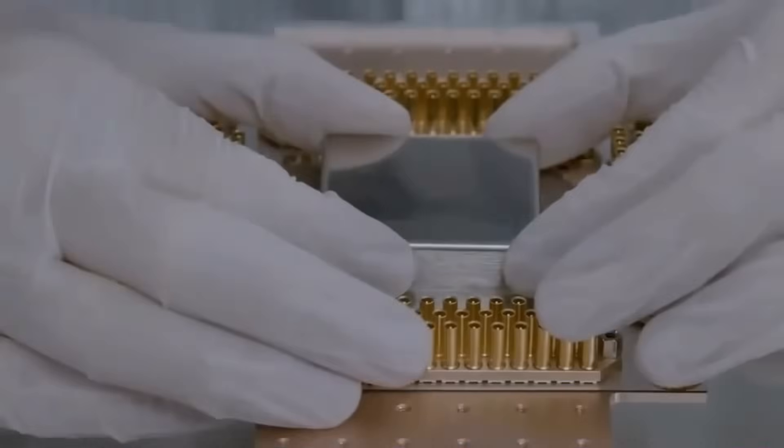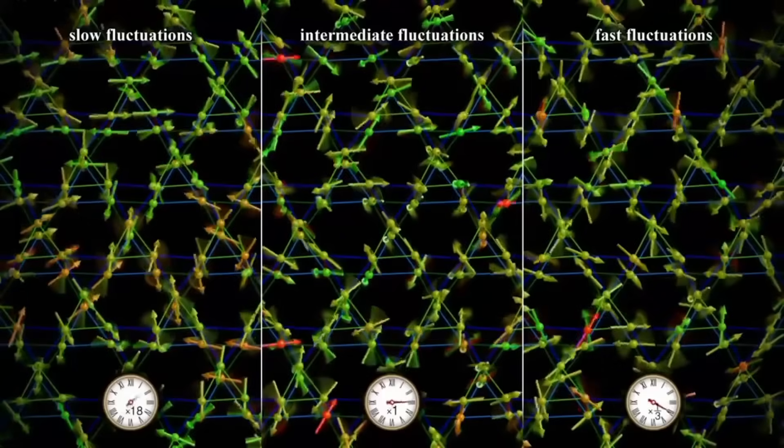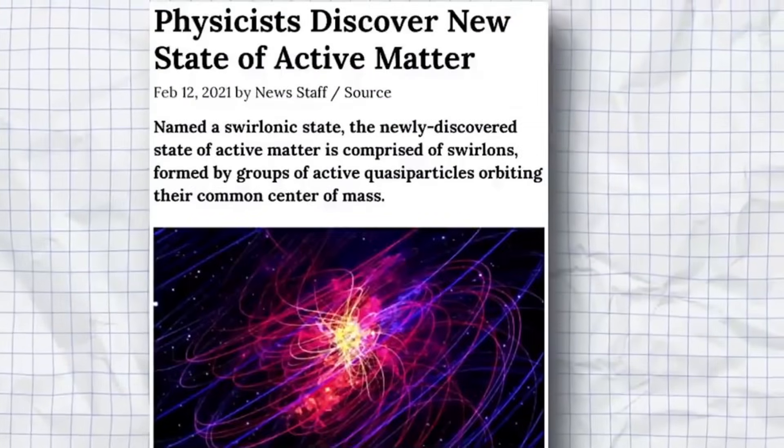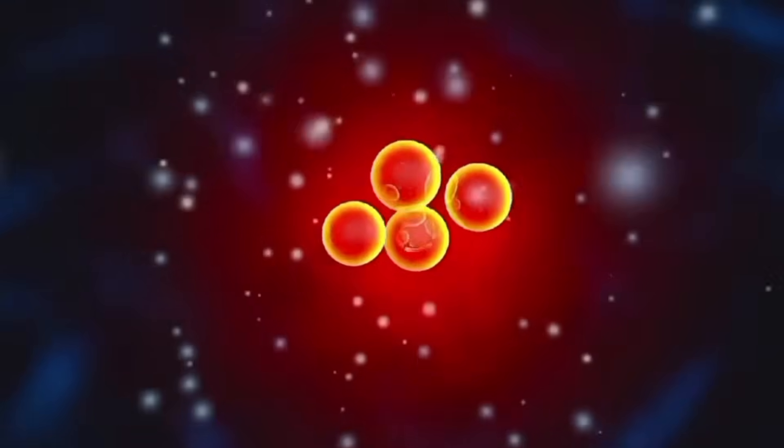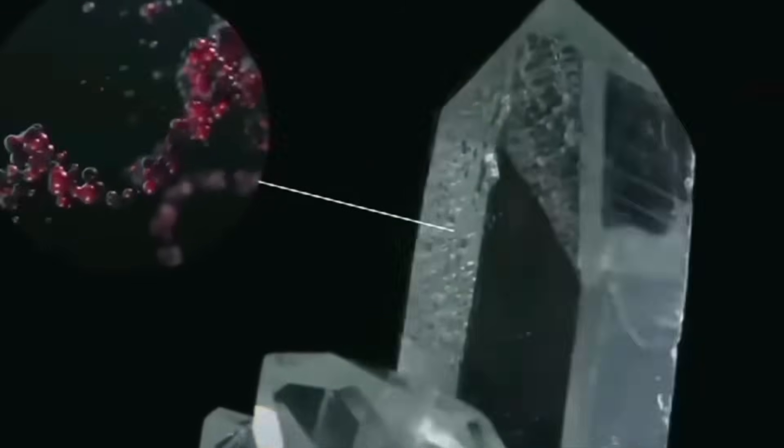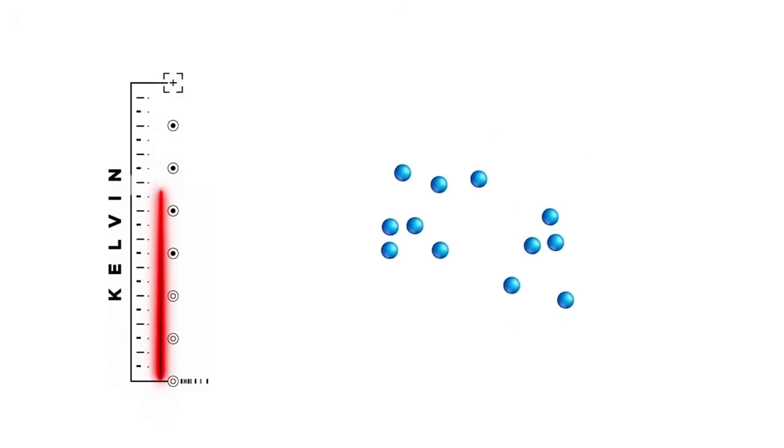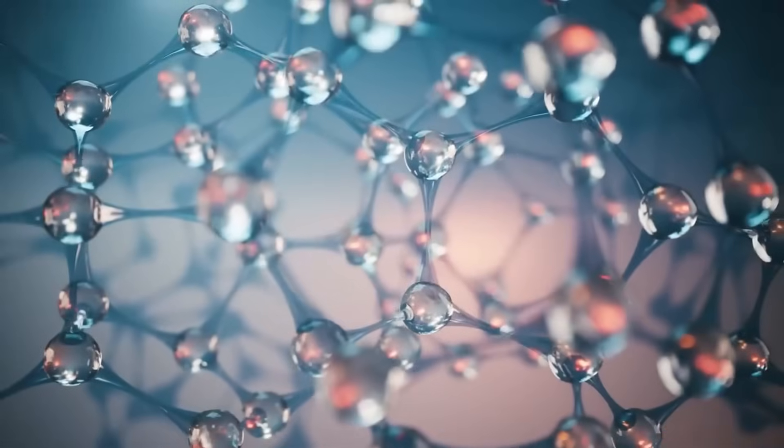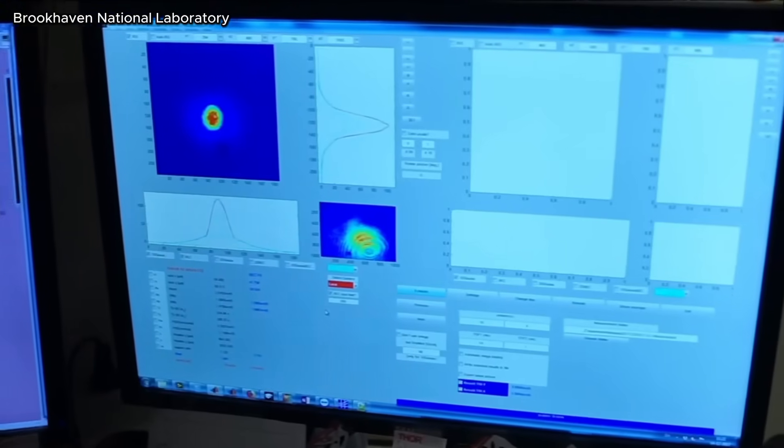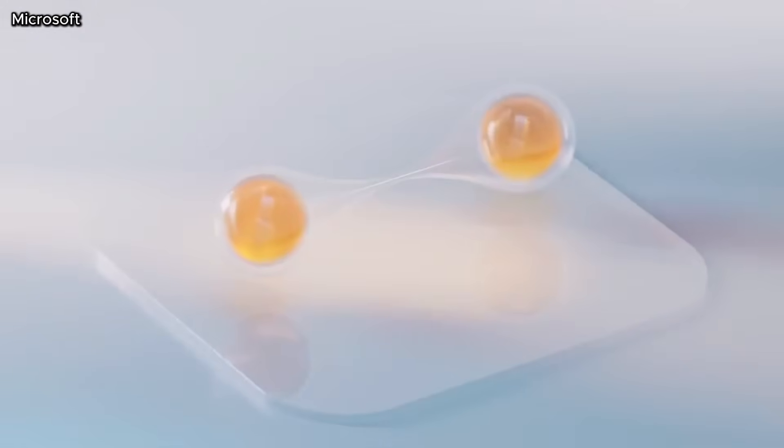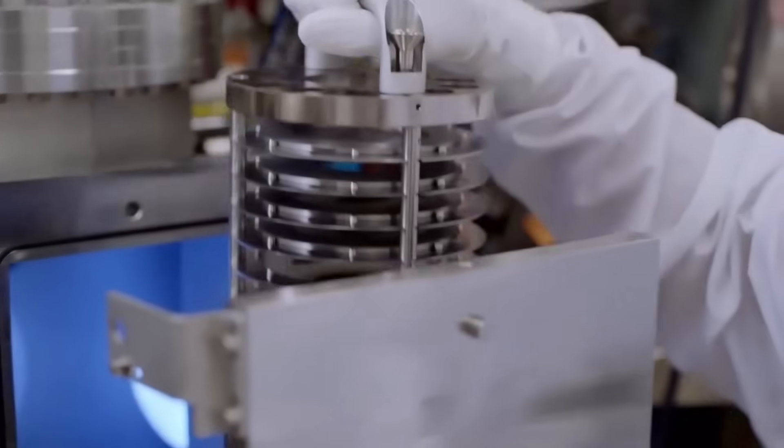In one domain, all the electron spins align perfectly like soldiers standing at attention. This creates a cold, ordered state physicists call the ice component. But in the adjacent domain, electron spins remain completely random and disordered like a crowd in panic. This is the fire component. The material doesn't gradually transition between these states. It flips between them at a precise boundary, creating a massive change in magnetic entropy, essentially releasing or absorbing heat energy in an instant.